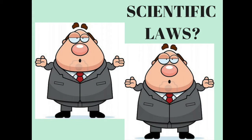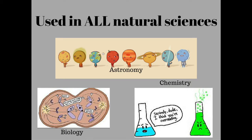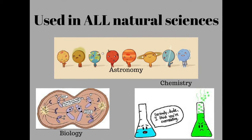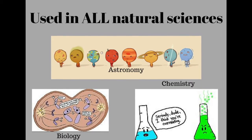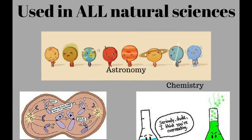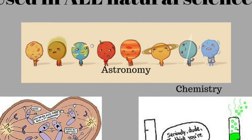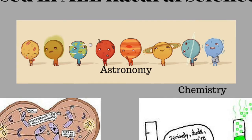What then is a scientific law? A scientific law is a statement that describes an observable occurrence in nature that appears to be always true. It is a term used in all of the natural sciences such as astronomy, biology, chemistry and physics, to name a few.